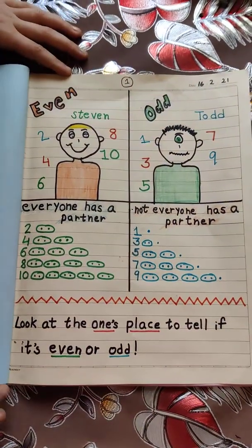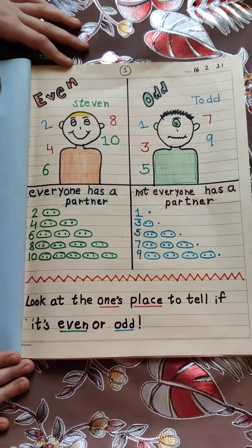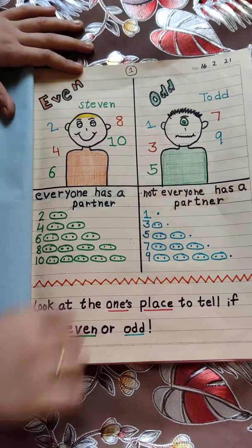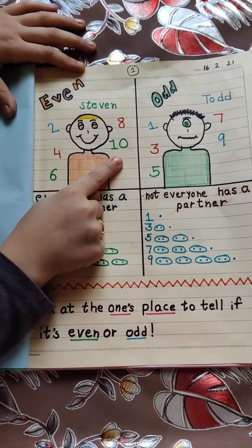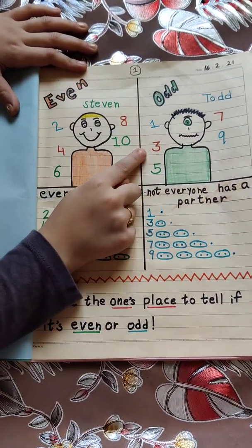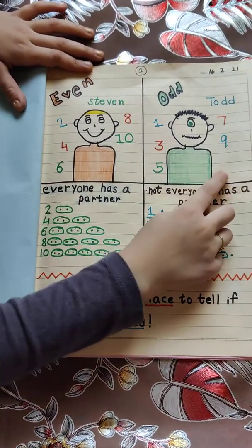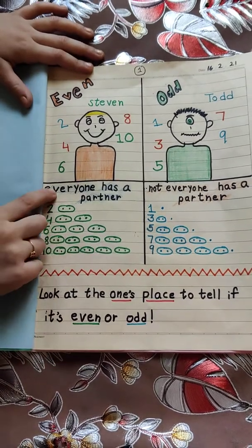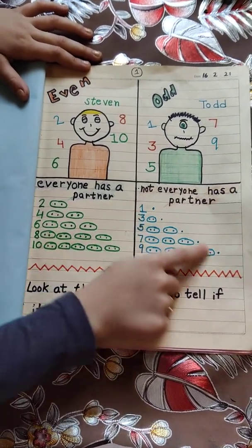Meet my two friends, Even Stephen and Odd Todd. They both have beautiful farms. Even Stephen has two dogs, four cats, six cows, eight hens and ten goats. And Odd Todd has one dog, three cats, five buffaloes, seven cows and nine hens. In Even Stephen's farm, everyone has a partner. But in Odd Todd's farm, not everyone has a partner.